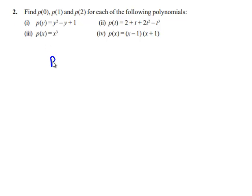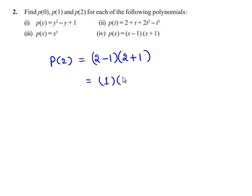The value of p of 2 can be found by substituting 2 in the place of x, which gives p of 2 equal to 2 minus 1 multiplied by 2 plus 1. We know that 2 minus 1 is 1 and 2 plus 1 is 3. 1 multiplied by 3 is 3. Therefore, the value of p of 2 is equal to 3.